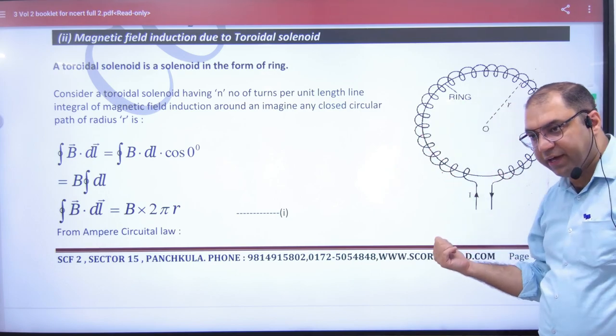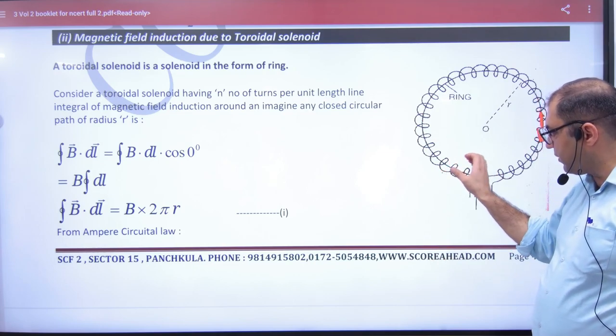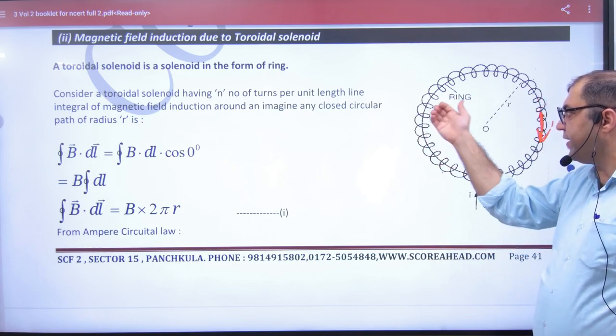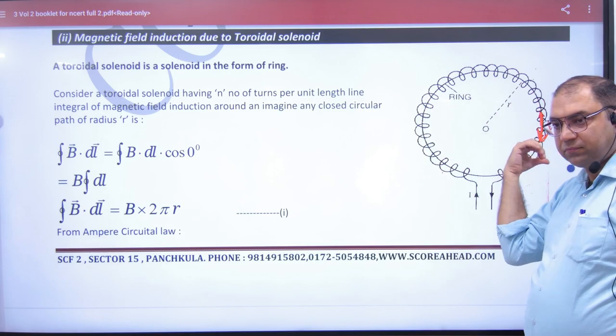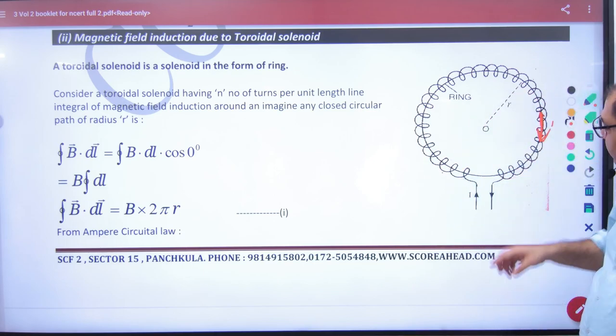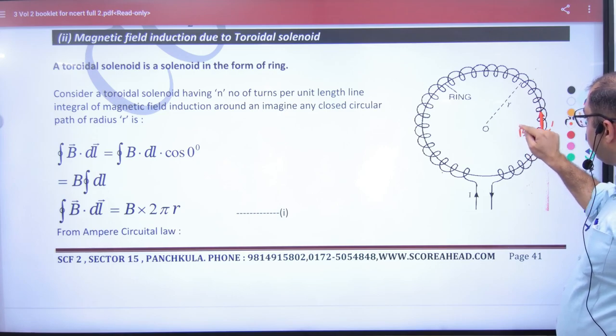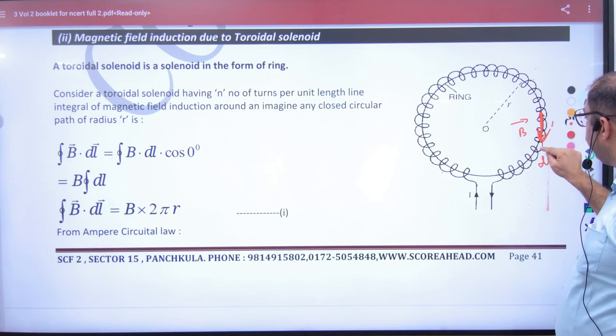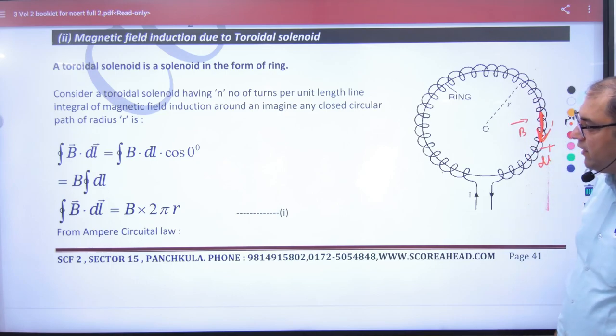DL vector will go with B because the current is going like this, so B vector is like this. B vector is below and DL is below. So you have a closed path where you want to take B. B and DL, what will be called?